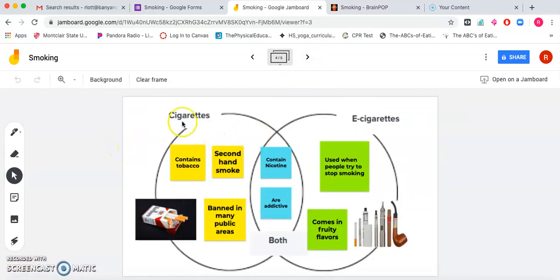So right here, we are going to compare cigarettes. So cigarettes is the yellow side to e-cigarettes, which is the green side. And in the middle is their similarity, so what they both have. So the cigarettes contain tobacco. You can get secondhand smoke from cigarettes. They are banned in many public areas. And this is a picture of cigarettes.